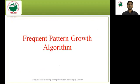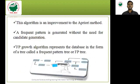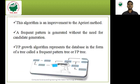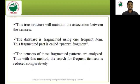The Frequent Pattern Growth algorithm is an improvement over the Apriori method. A frequent pattern is generated without the need for candidate generation — there is no candidate generation in FP Growth. The database is represented in the form of a tree called a Frequent Pattern Tree, or FP Tree. This tree structure maintains the association between itemsets. The database is fragmented using one frequent item, and this fragmented part is called a pattern fragment, which reduces space.